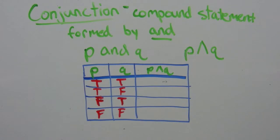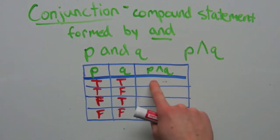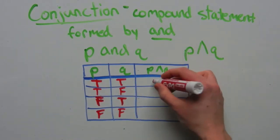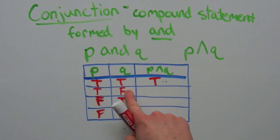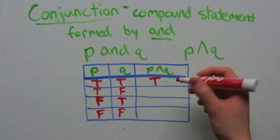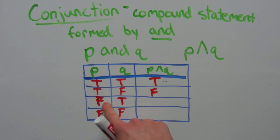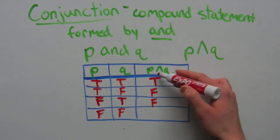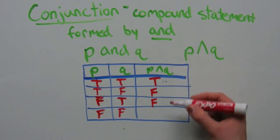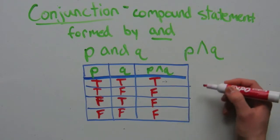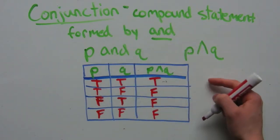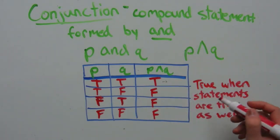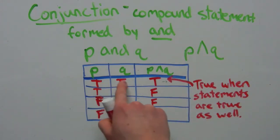In order for P and Q to be true, both have to be true. If P is true and Q is true, then P and Q is true. If P is true and Q is false, then P and Q cannot be true, so it's false. We need both of them true for the conjunction to be true. If they're both false, there's no way it can be true. A conjunction is true only when both statements are true — that only occurs in the first option when P is true and Q is true.